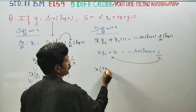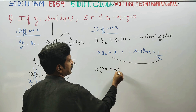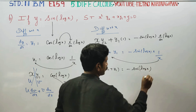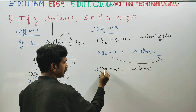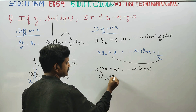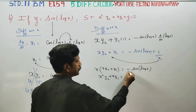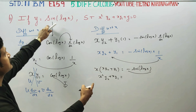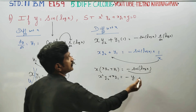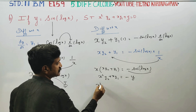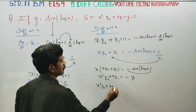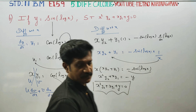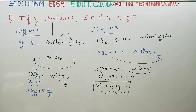xy2 plus y1 is equal to minus sin(log x) times 1/x. Cross-multiplying by x: x²y2 plus xy1 equals minus sin(log x). Since y = sin(log x), we get x²y2 plus xy1 plus y is equal to 0. This is your final answer. Thank you.